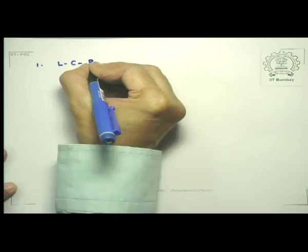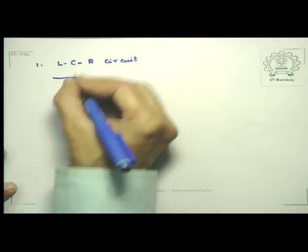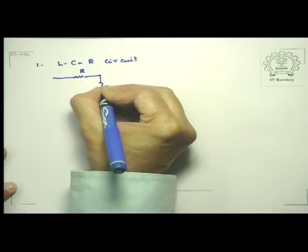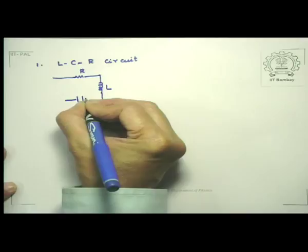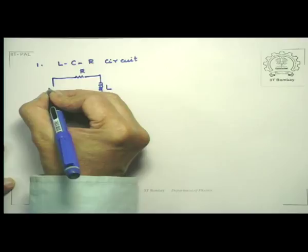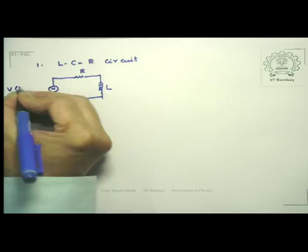Let me begin by giving a summary of the last lecture. Let me redraw the circuit. I have a resistance R, an inductance L, and a capacitance C, all three of them connected to a source of alternating voltage given by V(t) = Vm sin(ωt).